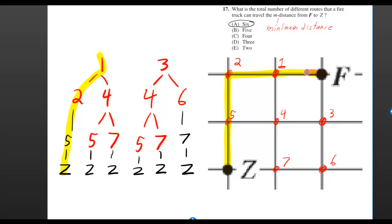But you also could have gone to point 1 and then to point 4 instead of point 2, and then you could have gone to point 5 and then to point Z. So that's one more route. If you went to point 1 and then to point 4, you could have gone to point 7 and then to point Z. And that gives us one more route.